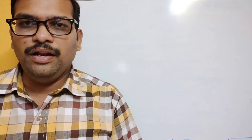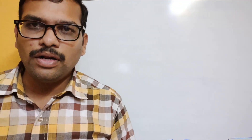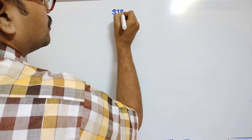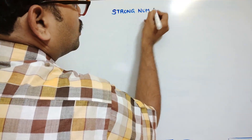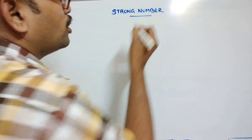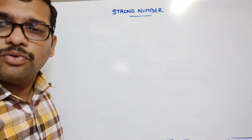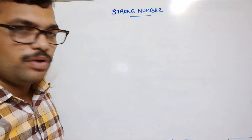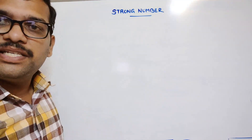Hello friends, welcome back to our channel. In today's session we'll discuss one program: to find whether a given number is a strong number or not. First let us see the logic for this strong number so that we can implement it in our own language. If you want to implement in C language, use the syntax for C; if you want to implement in Python, use the syntax for Python. The logic will be the same.